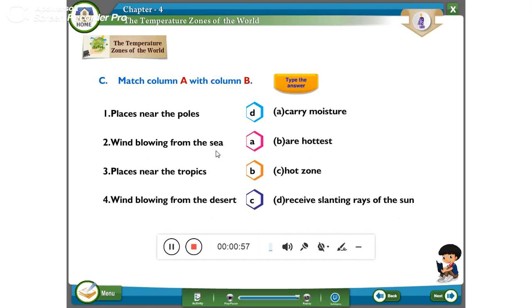So, next one. Match the column A with the B. Places near the poles. Second one. Wind blowing from the sea. Places near the tropics. Wind blowing from the desert.